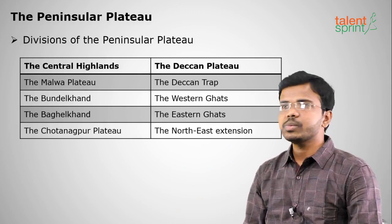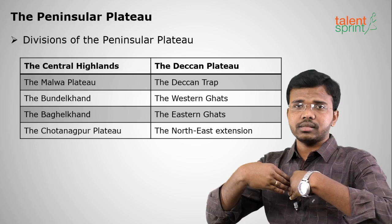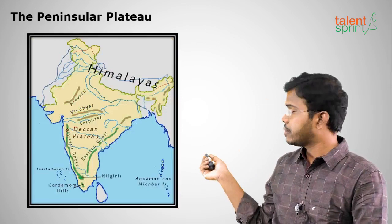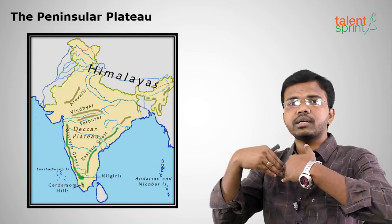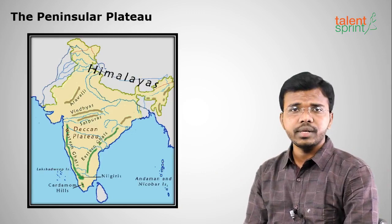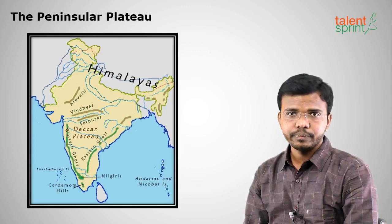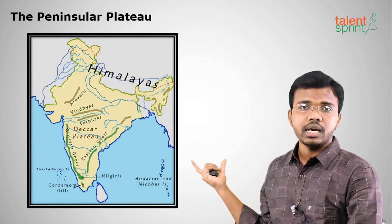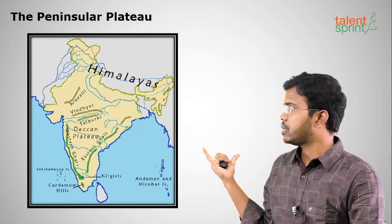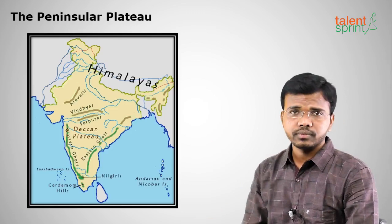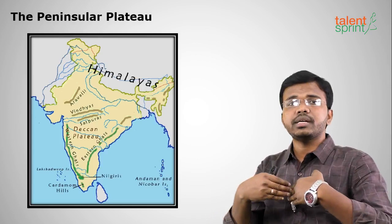The Western Ghats are a continuous range of mountains, while the Eastern Ghats are discontinuous. Both meet at the Nilgiri Hills in Tamil Nadu — a frequently repeated exam question. The highest peak of the Western Ghats is Anamudi, and the highest peak of the Eastern Ghats is Jindhagada Peak in Odisha (some also cite Mahendragiri).